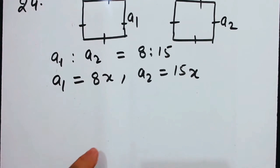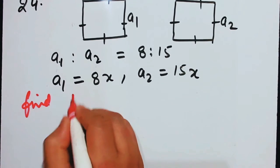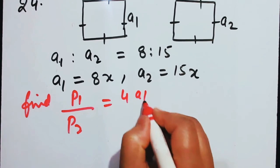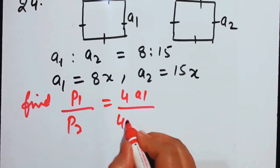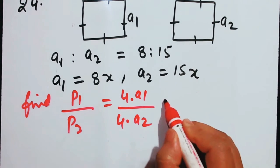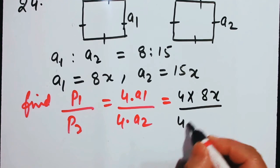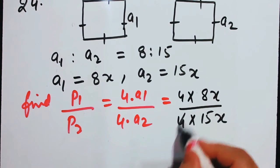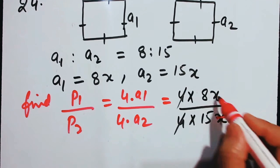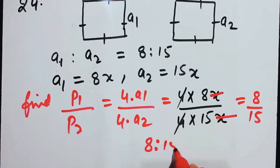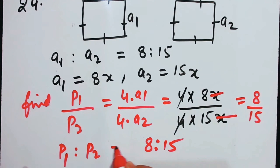Find P1 by P2. P1 equals 4A1 equals 4 times 8x, and P2 equals 4A2 equals 4 times 15x. The 4 and x both cancel, giving 8 by 15. So P1 is to P2 equals 8 is to 15.